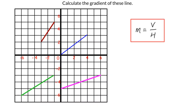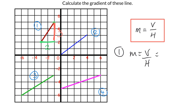We can go through these quickly, but to do that we need to identify the vertical and horizontal distances. Looking at the red line — we'll call that number one, the blue line number two, green number three, and the pink or purple number four. For line one, the horizontal distance is two boxes and the vertical distance is three boxes. So M equals V over H: the gradient of line one is three over two.